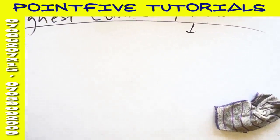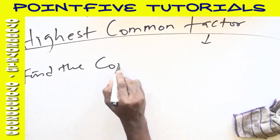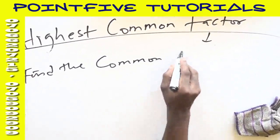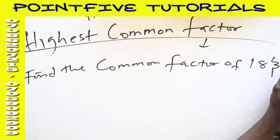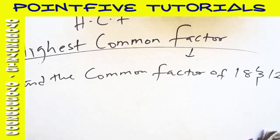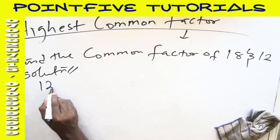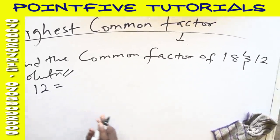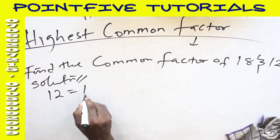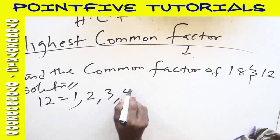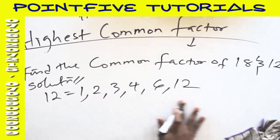I said find the common factor of 18 and 12. Solution: For 12, you first of all find the numbers that can divide 12 without remainder. That's factors of 12. 1 can divide 12 without remainder, 2 can go, 3 can go, 4 can go, 6 can go, and 12. All these guys are the factors of 12.